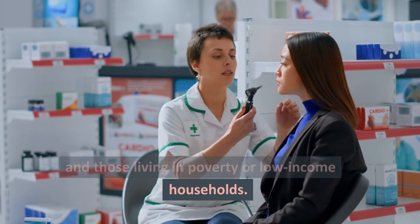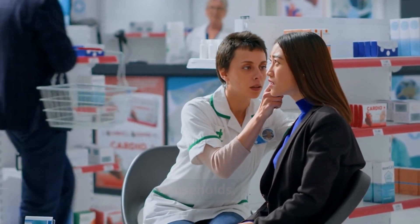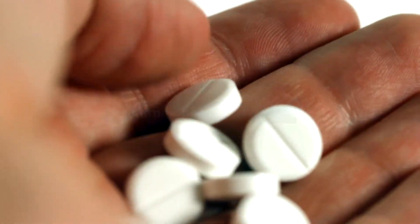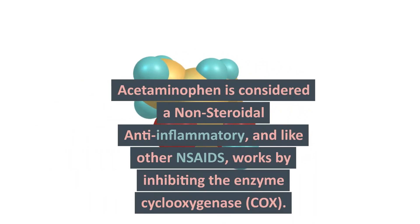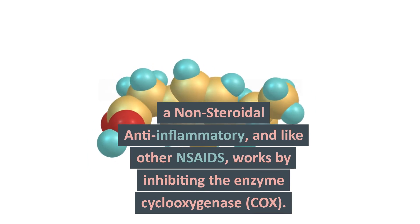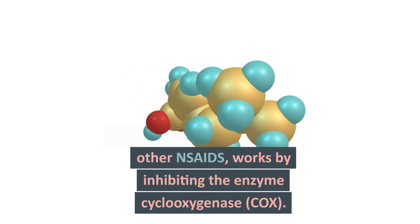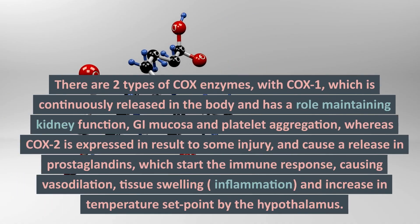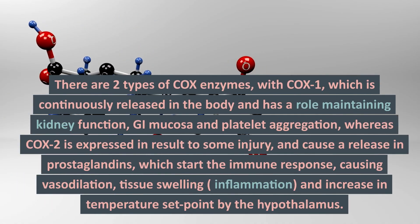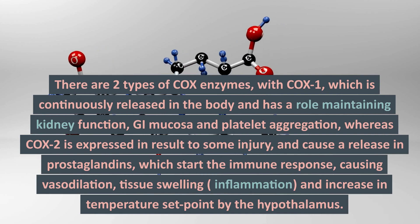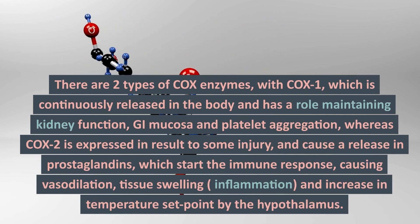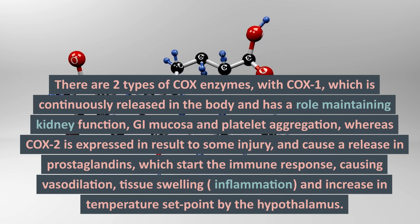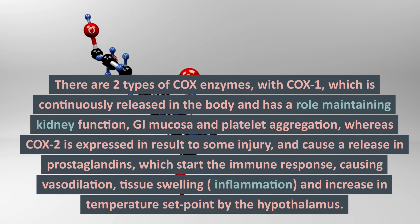In this lesson we'll focus on acetaminophen, or Tylenol. Acetaminophen is considered a non-steroidal anti-inflammatory and, like other NSAIDs, works by inhibiting the enzyme cyclooxygenase, or COX. There are two types of COX enzymes: COX-1, which is continuously released in the body and has a role in maintaining kidney function, GI mucosa, and platelet aggregation, and COX-2, which is expressed in response to some type of injury.